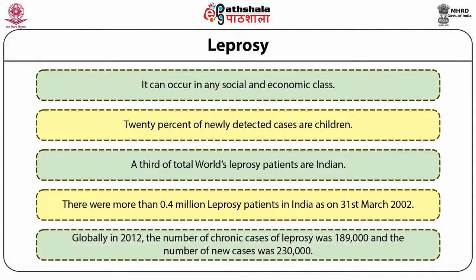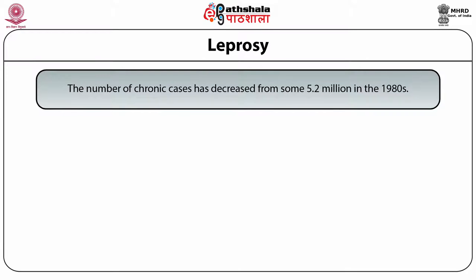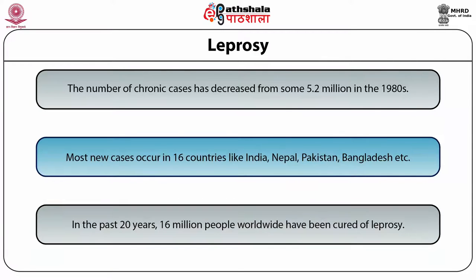Globally in 2012, the number of chronic cases of leprosy was 189,000 and the number of new cases was 230,000. The number of chronic cases has decreased from some 5.2 million in the 1980s. Most new cases occur in 16 countries including India, Nepal, Pakistan and Bangladesh. In the past 20 years, 16 million people worldwide have been cured of leprosy.